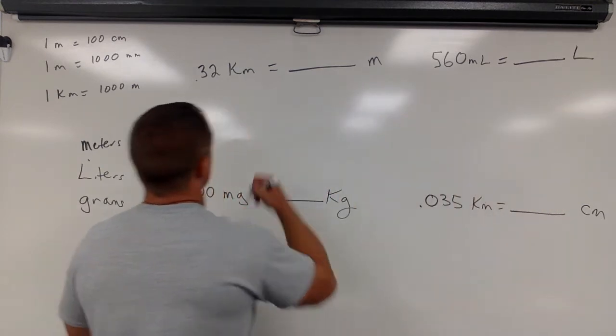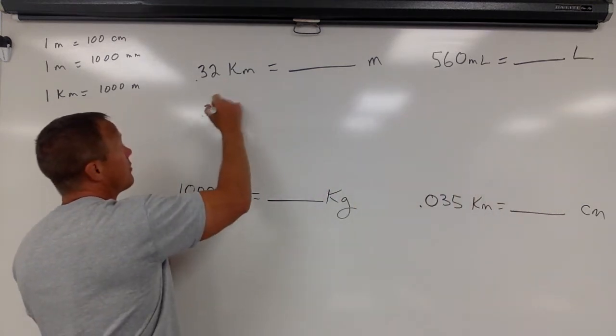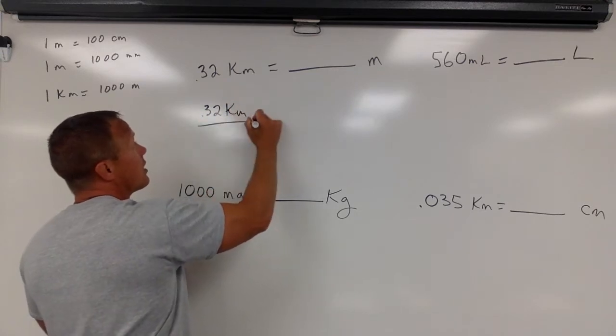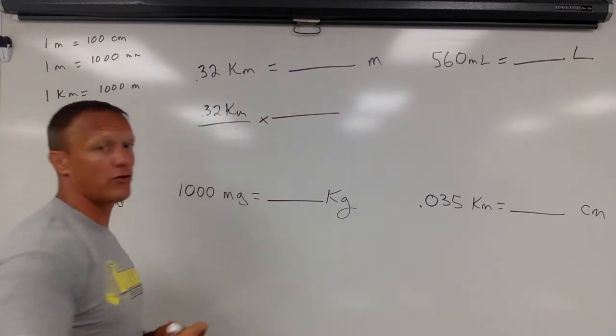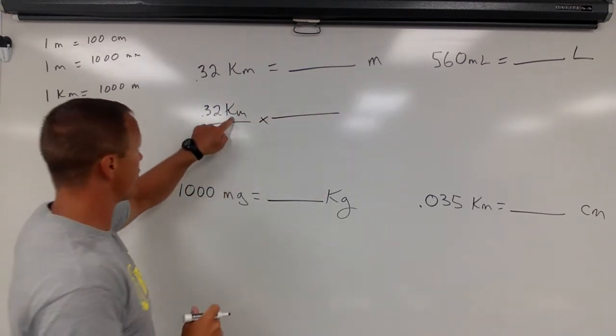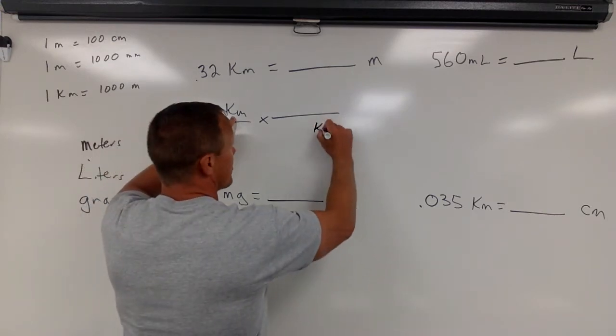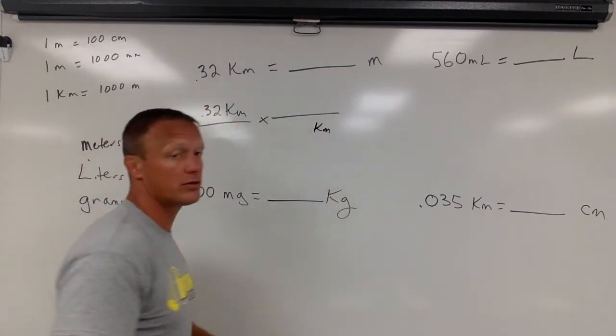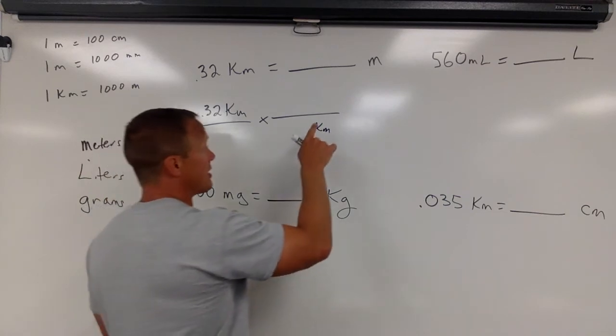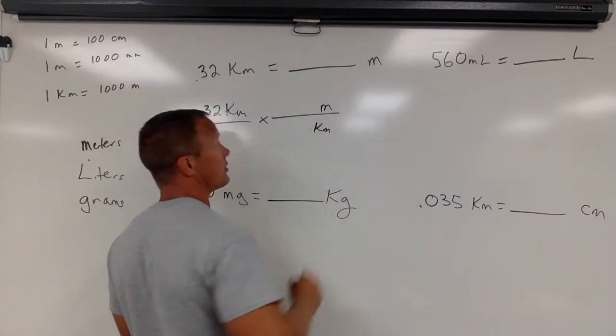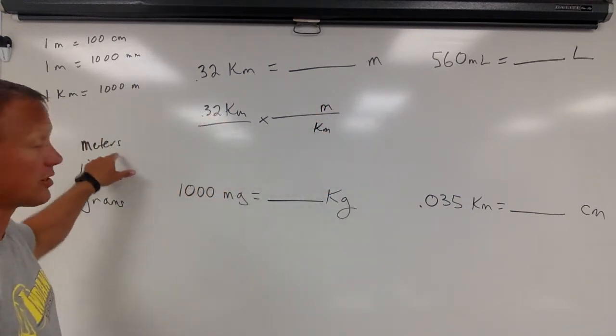Same thing with our dimensional analysis here. We start with what we know. We have 0.32 kilometers. I will always do a conversion to the base unit. So remember, this label kilometers needs to be on the bottom. Our labels have to cancel. I'm always converting this to the base unit. In this case, our base unit is meters.